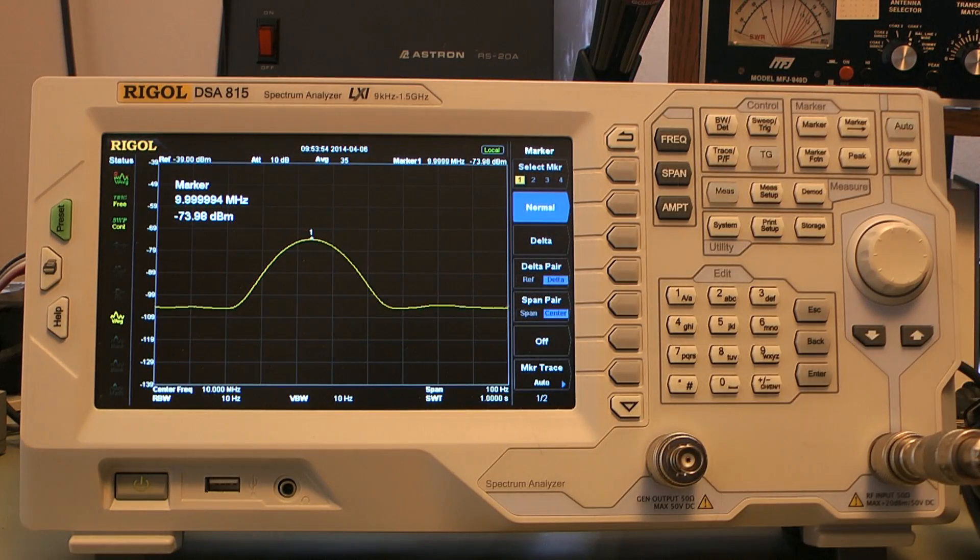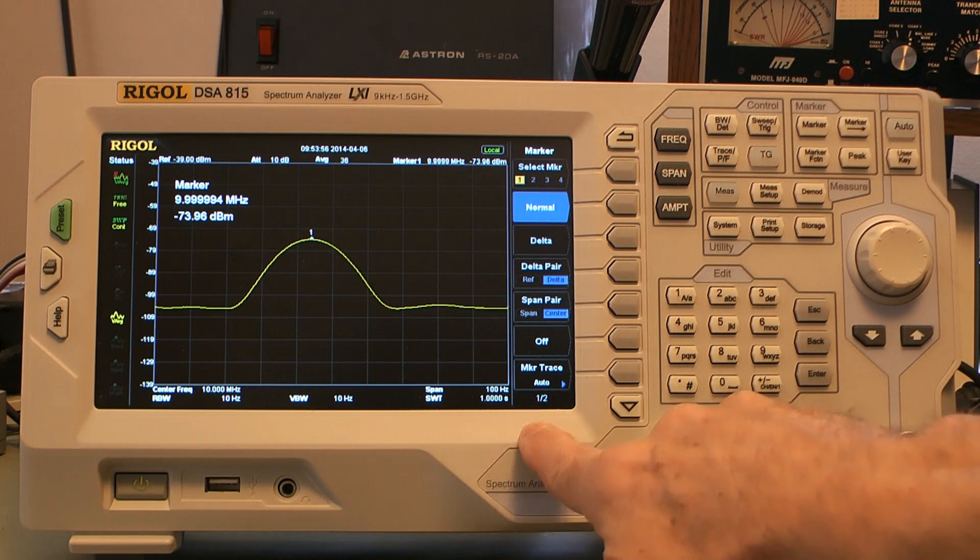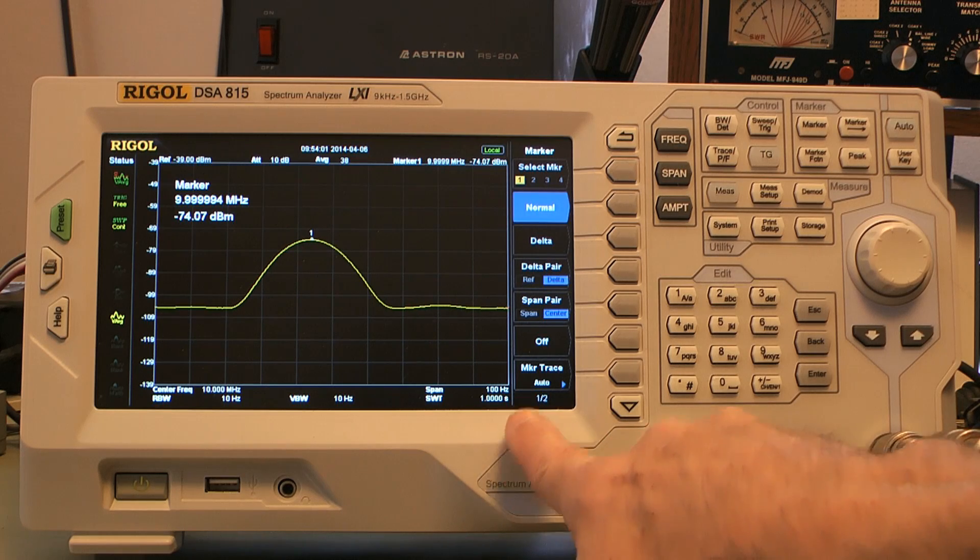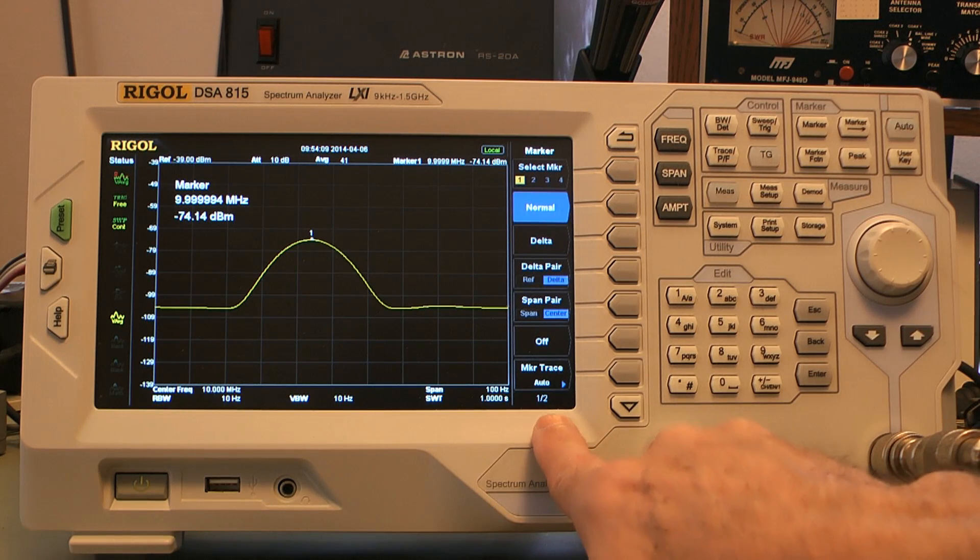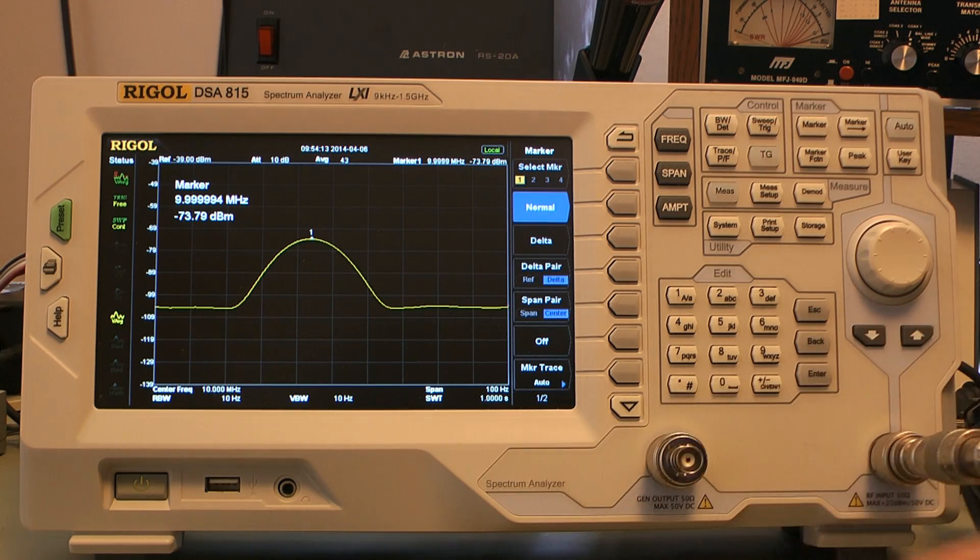You should know that the factory calibration on this was within about two hertz when I got it. So this is really just an exercise to learn how to do this. I'm not complaining about Rigol. It was calibrated well when I got it. I made it a little bit better, but this will just show you how to do it.